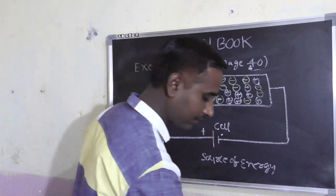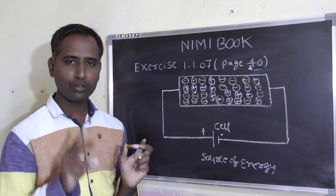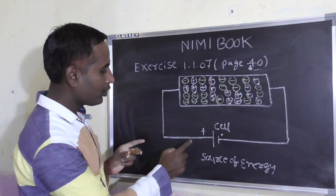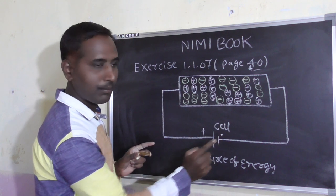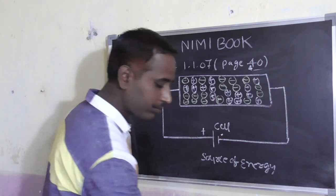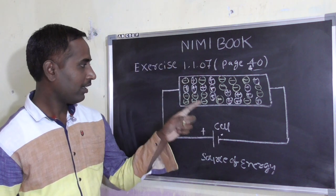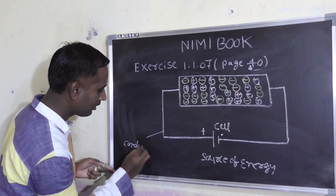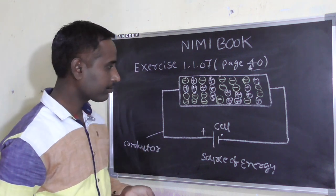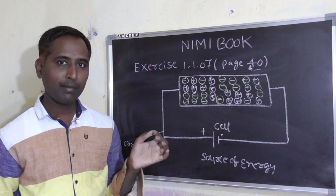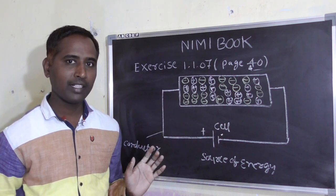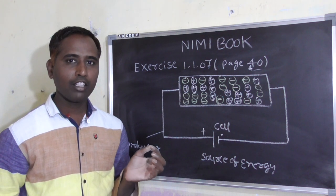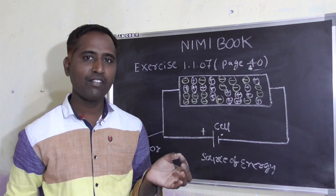यह plus है, यह minus है। आप कोई भी cell में देखो, उसमें दो terminals रहते हैं — एक plus रहता, एक minus रहता। यह plus terminal है, यह minus terminal है। यह हमारा cell हो गया, यह कोई भी एक material हो गया, यह conductor है — यह आपको समझ में आ गया तो what is current और repulsion of magnet समझ में आ जाता।